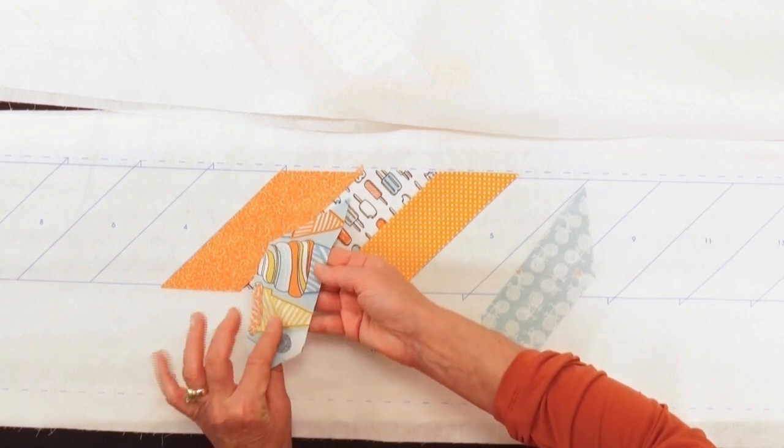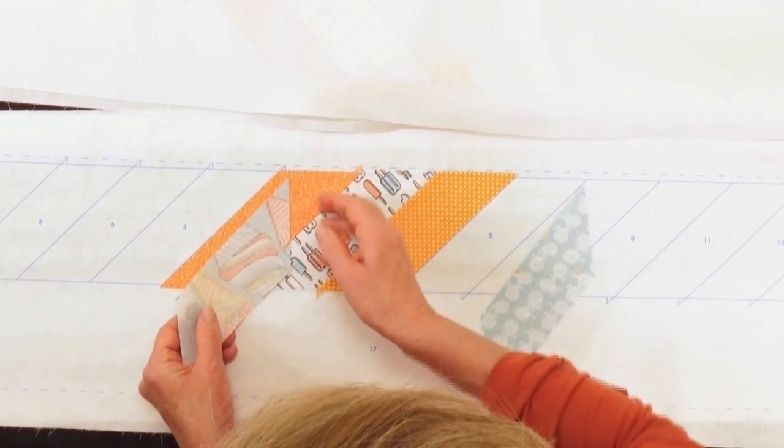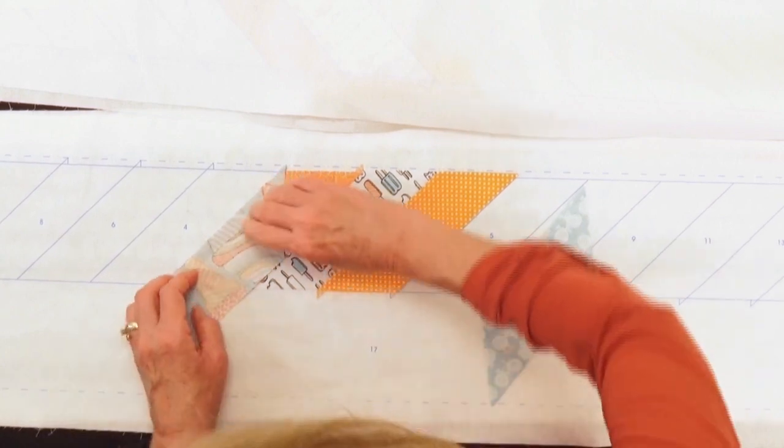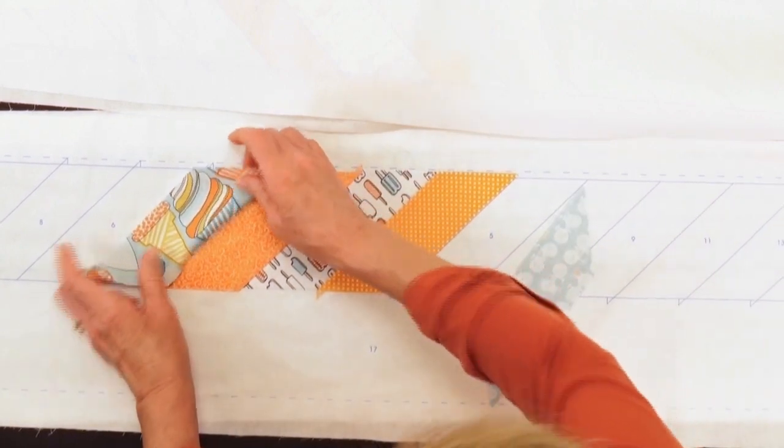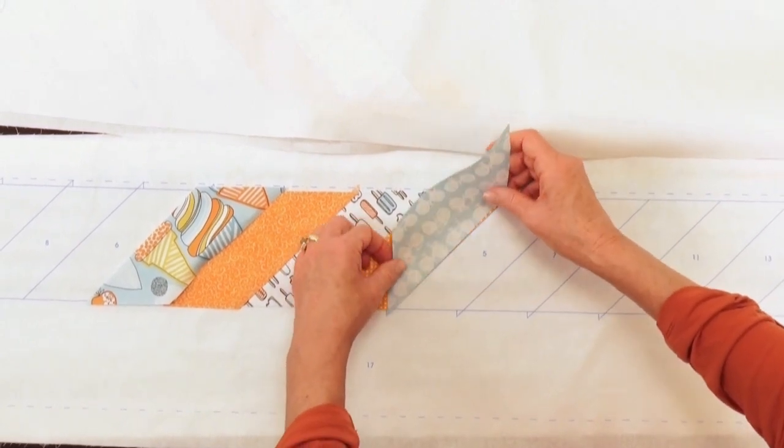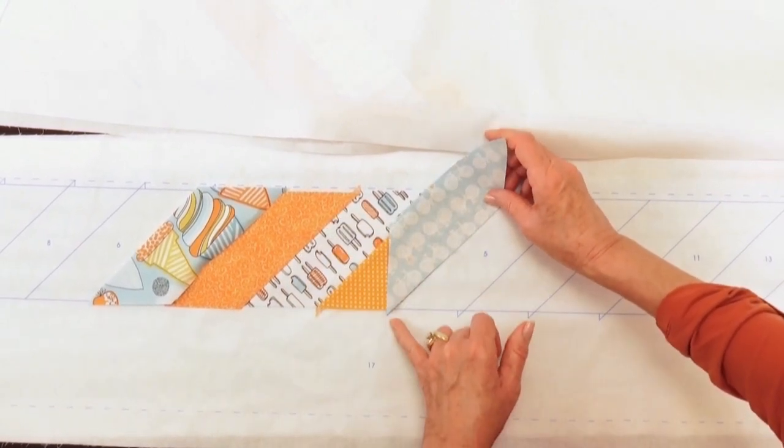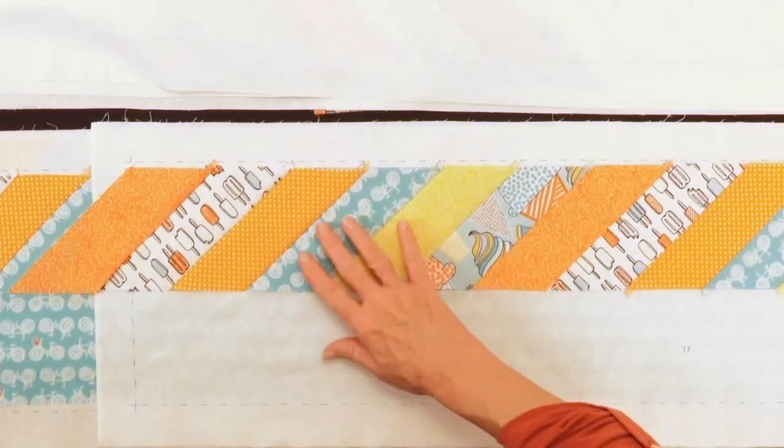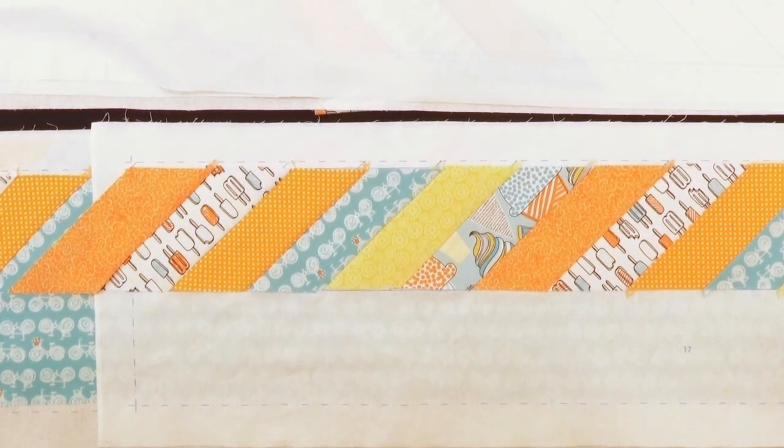Piece number four we're going to take right sides together with the point matching the point on the drawing. Sew and that's going to flip open like this and piece five right sides together matching up our point down on the bottom and sew that in a quarter inch.